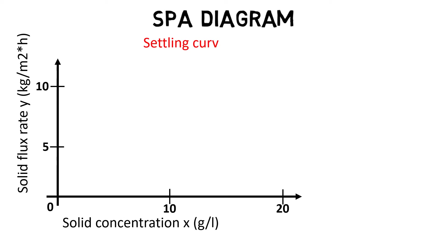One, the settling curve shows how fast the solids can be settled down. For example, at a usual MLSS of 3500 milligrams per litre, we have 6 kilograms per square meter per hour settled solids. If the curve is lower, we have less settled solids per hour, therefore the settling is slower.